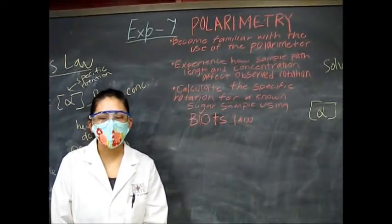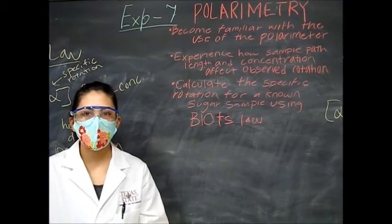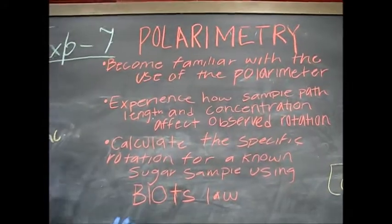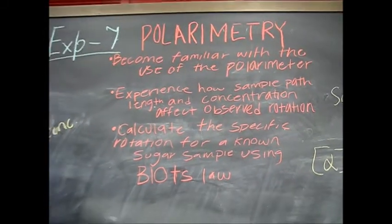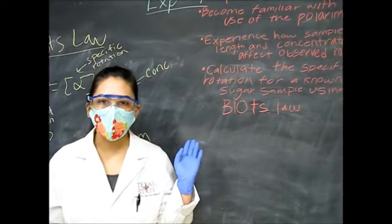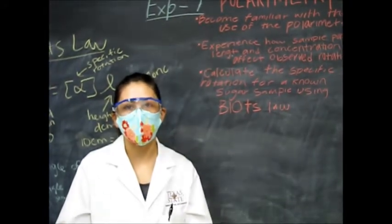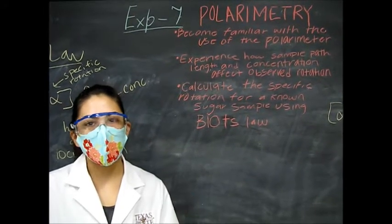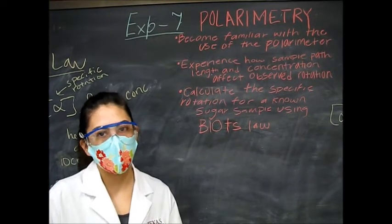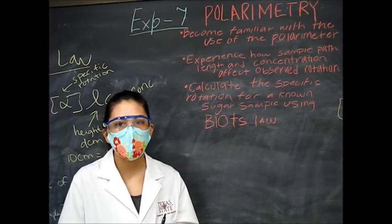Today we're going to be going over Experiment 7, Polarimetry. We'll briefly go over the key concepts and the math behind this lab. In this lab, you'll get familiar with the polarimetry machine and using it with LabQuest. We'll use this machine to look at the specific rotation and observed rotations of four different sugars — sucrose, fructose, galactose, and glucose — using height, concentration, and observed rotation to find the specific rotation.